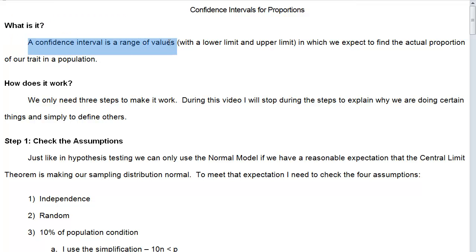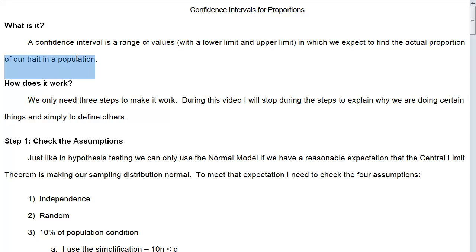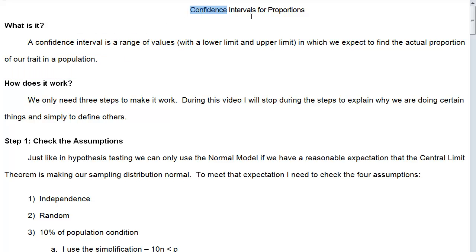A confidence interval is a range of values with a lower limit and an upper limit in which we expect to find the actual proportion of our trait in a population. I'll do confidence intervals for means in the future, but today I really want to talk about proportions. This is the actual proportion of a trait we are looking at in the population.